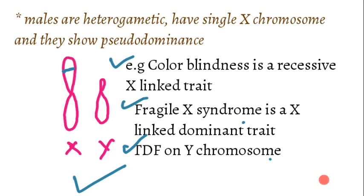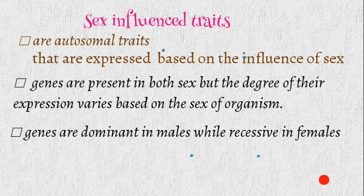Color blindness is a recessive X-linked trait. In females, both X chromosomes must carry the recessive allele; in males, a single recessive allele on the X chromosome is sufficient to show the trait. Fragile X syndrome is an X-linked dominant trait — in females, a single dominant allele is enough for expression; in males, the allele must be dominant to show the syndrome. TDF (testes determining factor) is present on the Y chromosome in males.